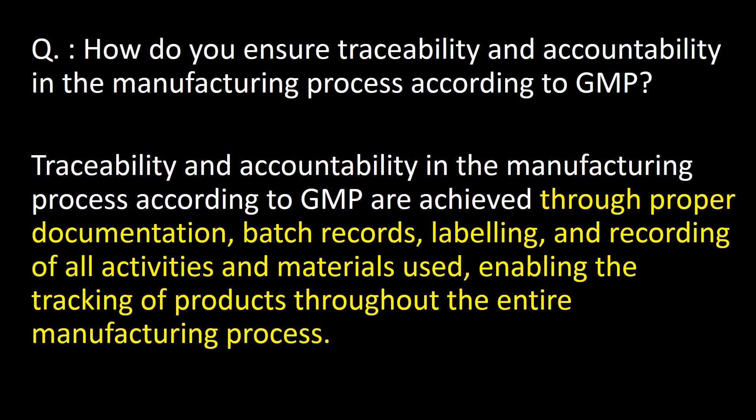How do you ensure traceability and accountability in the manufacturing process according to GMP? Traceability and accountability are achieved through proper documentation, batch records, labeling, and recording of all activities and materials used, enabling the tracking of products throughout the entire manufacturing process.